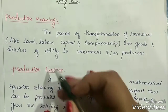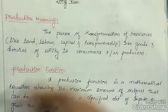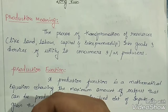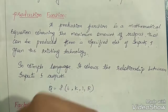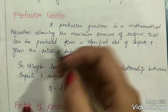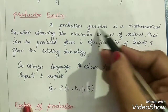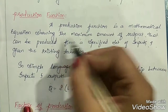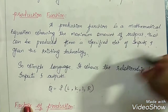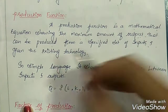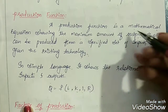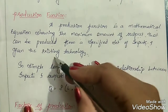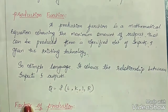It will satisfy the human wants. Next, production function. A production function is a mathematical equation showing the maximum amount of output that can be produced from a specified set of inputs and given the existing technology.